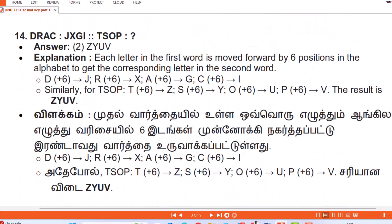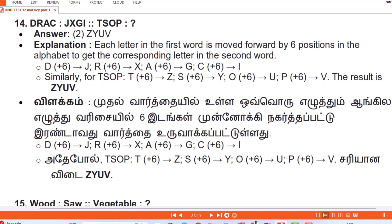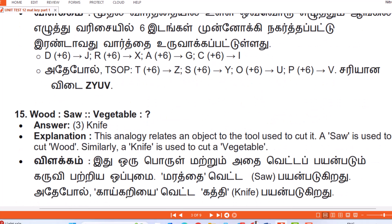Question 14: drac : jxgi :: tsop : Answer — zyuv. Explanation: Each letter in the first word is moved forward by 6 positions in the alphabet to get the corresponding letter in the second word. d+6=j, r+6=x, a+6=g, c+6=i. Similarly for tsop: t+6=z, s+6=y, o+6=u, p+6=v. So the answer is zyuv.